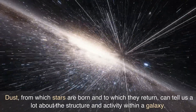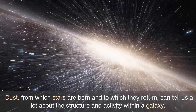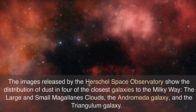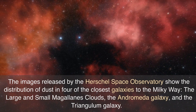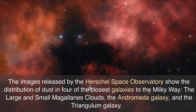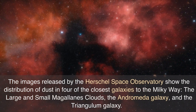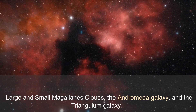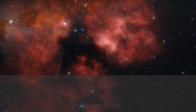Dust, from which stars are born and to which they return, can tell us a lot about the structure and activity within a galaxy. The images released by the Herschel Space Observatory show the distribution of dust in four of the closest galaxies to the Milky Way: the Large and Small Magellanic Clouds, the Andromeda galaxy, and the Triangulum galaxy.